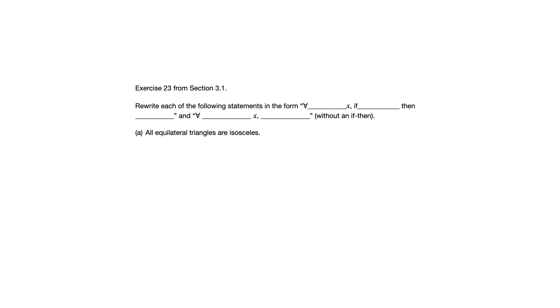All equilateral triangles are isosceles. In that format that they've asked us to use, the first one, we could say for all triangles x, if x is equilateral, then x is isosceles. Keep in mind, we need to use the if-then and we need the statement to have the same meaning as the original one. We need to be somewhat careful about how we do that. This is one way of doing that. For all triangles x, if x is equilateral, then x is isosceles. In my mind, that's probably the most natural way of writing it in that format that they asked for.